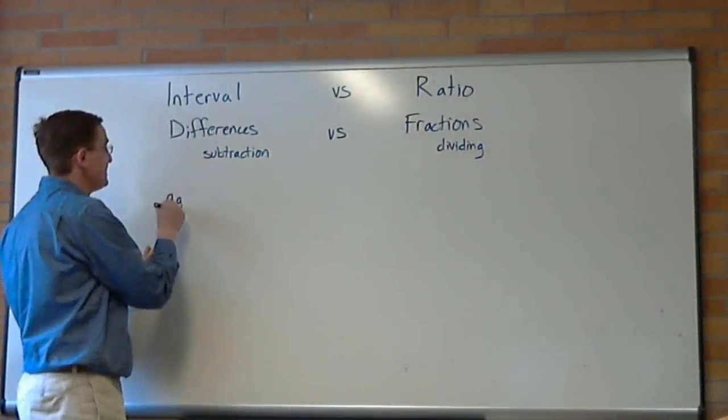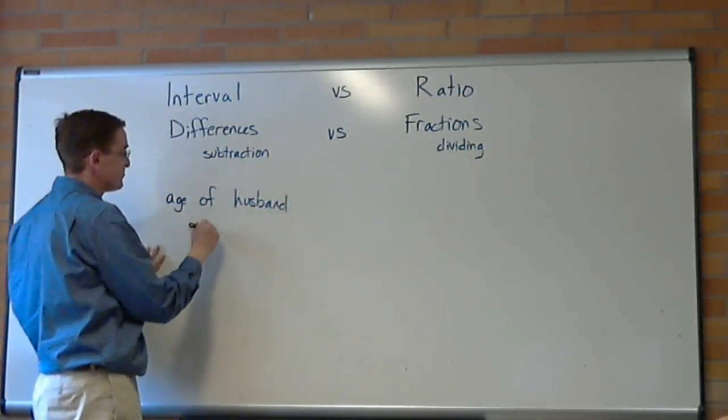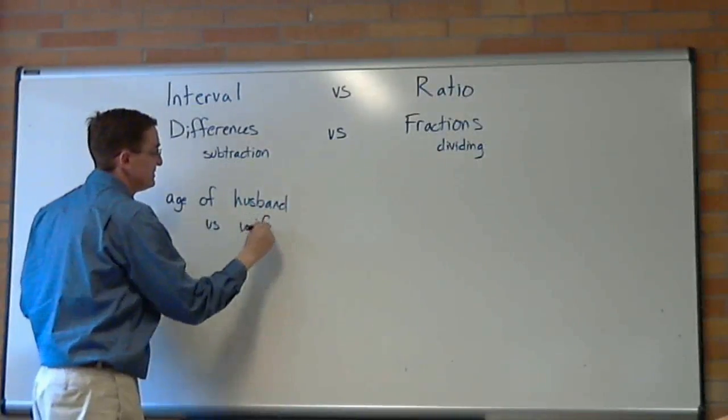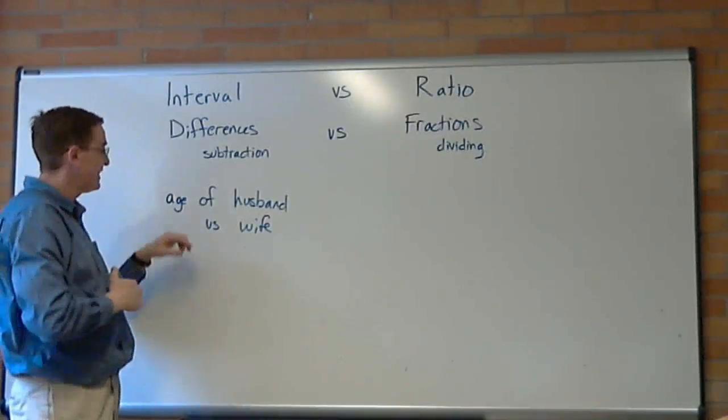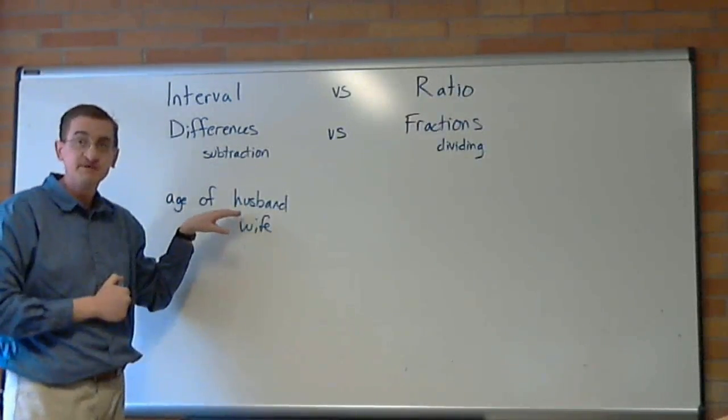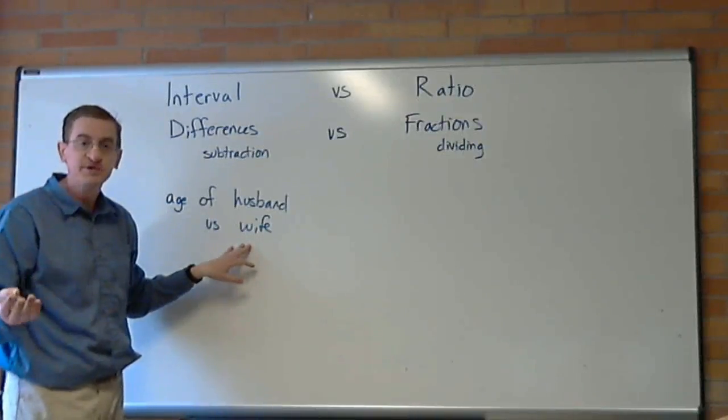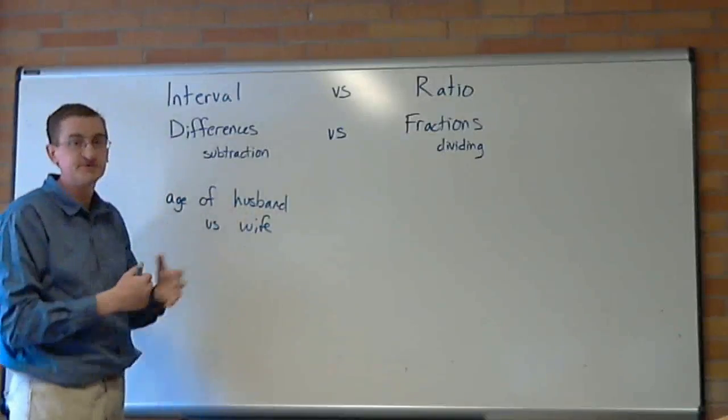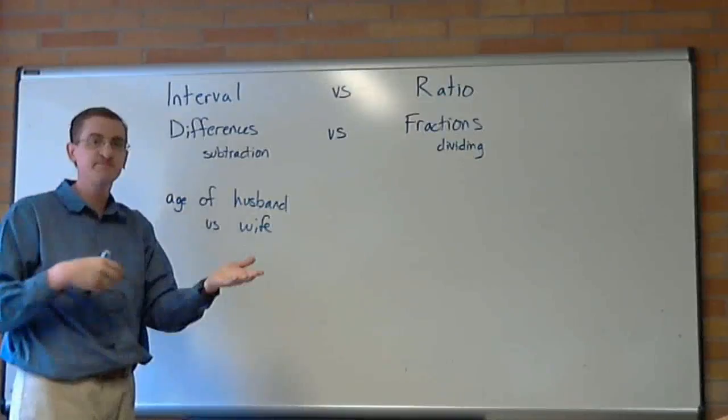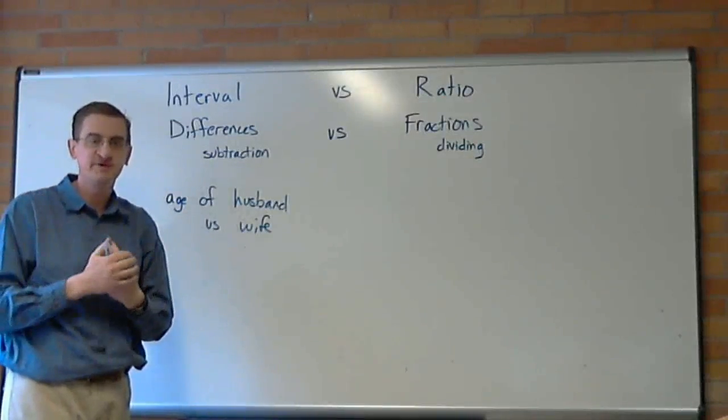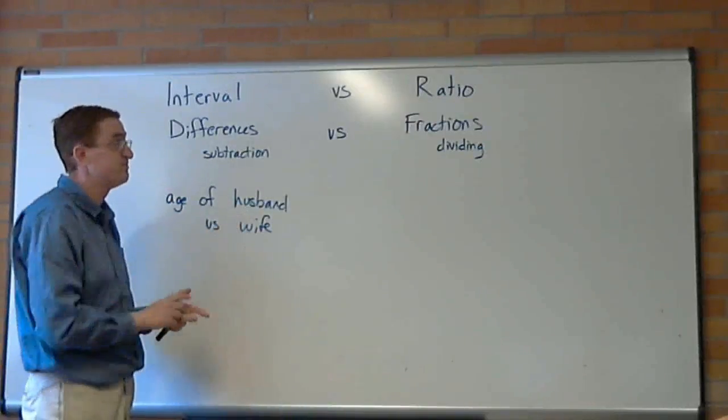If we wanted to look at the age of husband versus wife. If I tell you that Ann and Bob are married, and I tell you that Bob is 30 years old and Ann is 27 years old, well in your mind you compare those two by taking a difference. You say, well, obviously Ann is three years younger, because you took 30 minus 27. I forgot what numbers I used, I really should have wrote them down, but you did a subtraction in your head to compare those two.